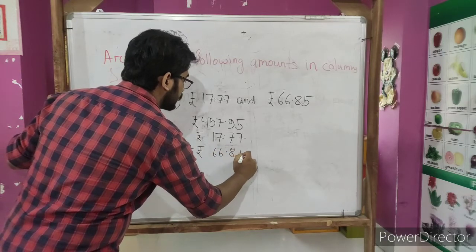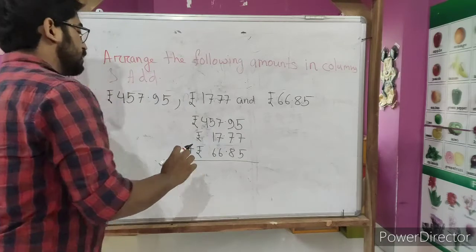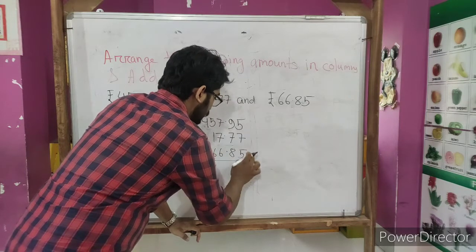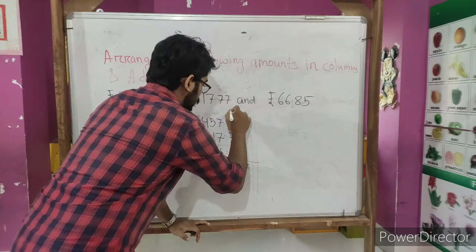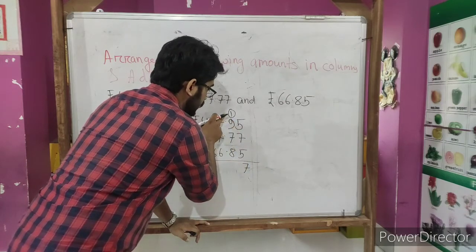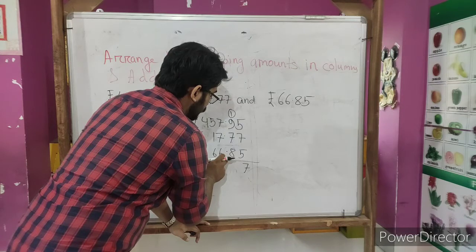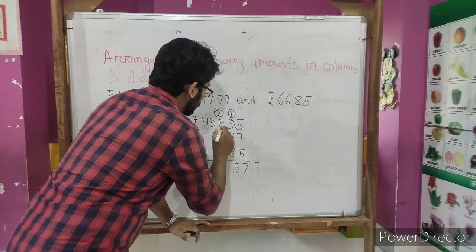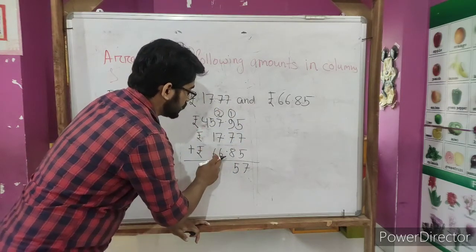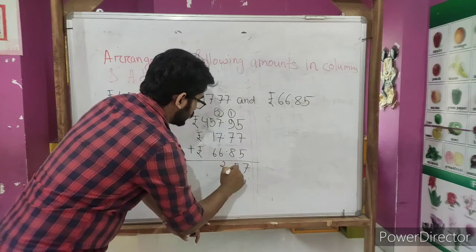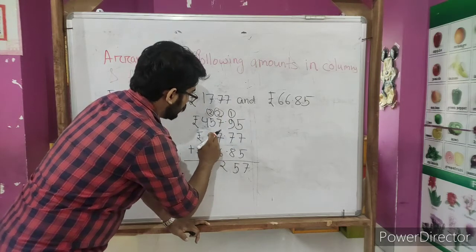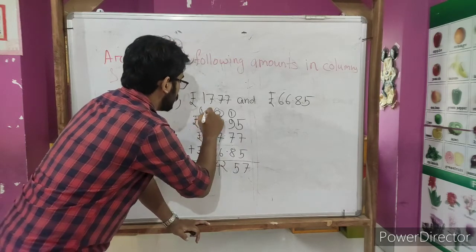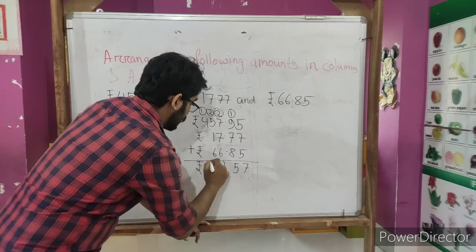Now we need to add this one. 7 plus 5 equals to 12, or 5 plus 5 is 10, plus 7 is 17, carry 1. Nine plus 1 is 10, plus 8 is 18, 19, 20, 21, 22, 23, 24, 25, carry 2 over here. Seven plus 7 is 14, plus 6 is 20, plus 2 is 22, carry 2. So 5 plus 1 is 6. Two 6s are 12, 13, and 14. Four carry 1. Four plus 1 is 5.